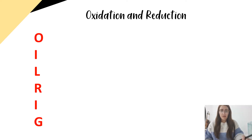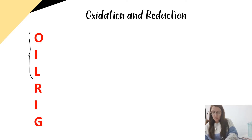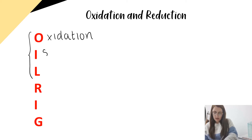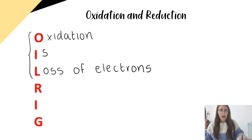The first thing that you'll learn at National 5 is this mnemonic OIL RIG. OIL RIG tells you what happens to compounds or complexes when they are oxidised or reduced. If we look at the OIL part first: OIL stands for oxidation as loss of electrons. So when you have an atom, ion, complex, or compound and you're oxidising it, it loses electrons and when they lose electrons, they become more positive.